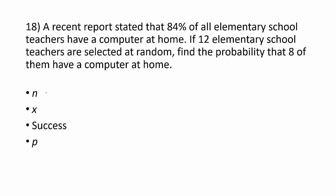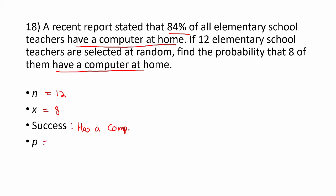Let's list the important information. n is 12. We're looking to compute the probability that x equals exactly 8. The success — what we're counting — is that a person has a computer at home. Do we know that probability? Yes, we do. It says that 84% have a computer at home, so the value of p in this problem is 0.84.